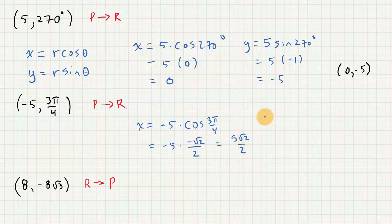And then the y value will be r times sine of 3 pi over 4. So that's negative 5 times the square root of 2 over 2.